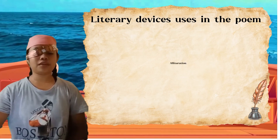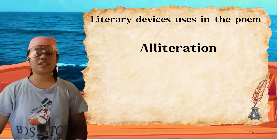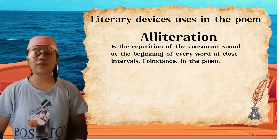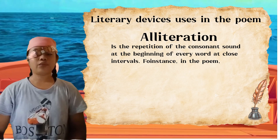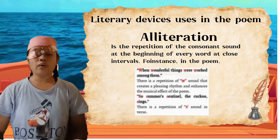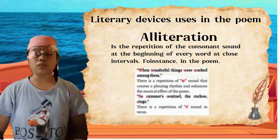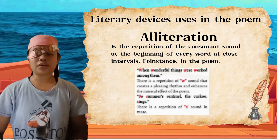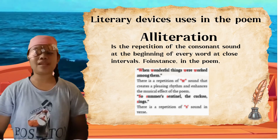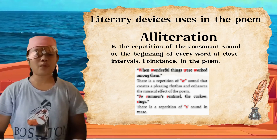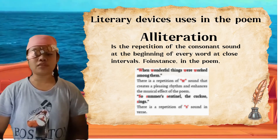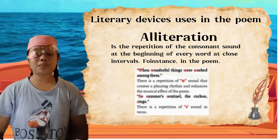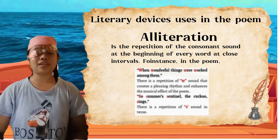Second: Alliteration — the repetition of consonant sound at the beginning of every word at close intervals. For instance, 'when wonderful things rework among them' has a repetition of the W sound that creates a pleasing rhythm and enhances the musical effect of the poem. And in 'So summer's sentinel, the cuckoo sings,' there is a repetition of the S sound.